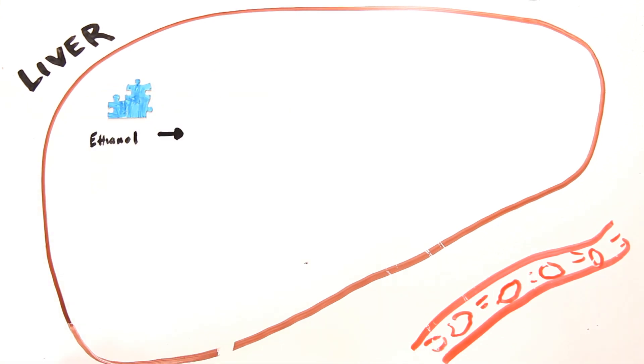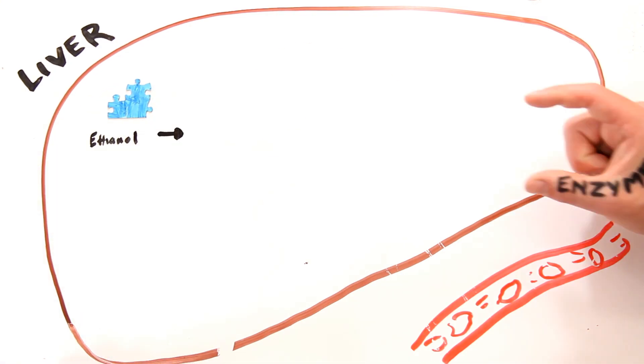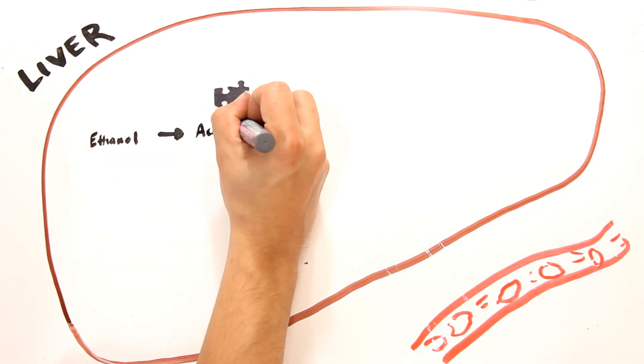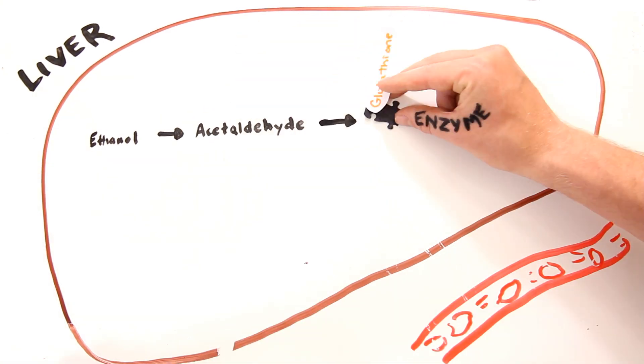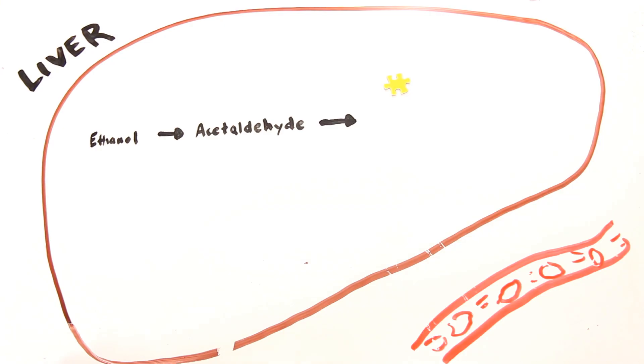Alcohol, otherwise known as ethanol, is absorbed in the stomach and makes its way to the liver to pass this clearance test. First, the enzymes turn alcohol into acetyl aldehyde. Then a different enzyme, plus a compound called glutathione, changes acetyl aldehyde into acetate, which is easily excreted by the body.